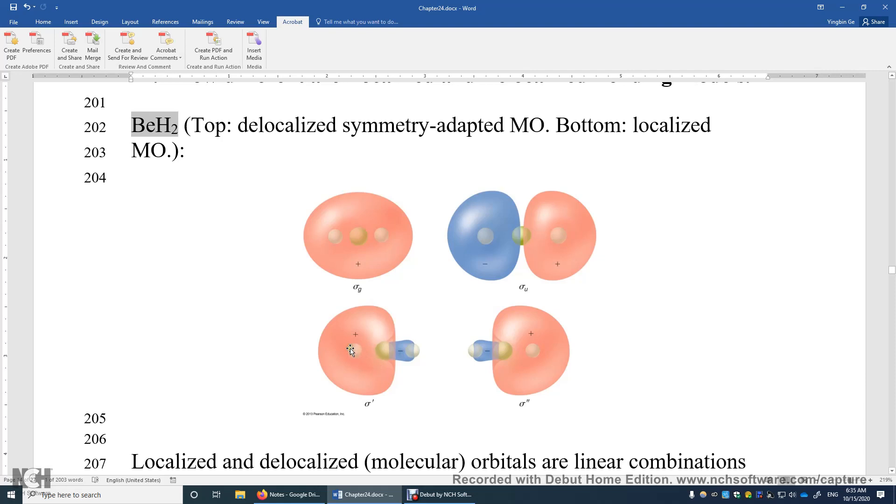It interferes with this 1s orbital of the hydrogen atom in a constructive manner. So you have a bond here. This is a sigma bond between Beryllium and the hydrogen on the left.